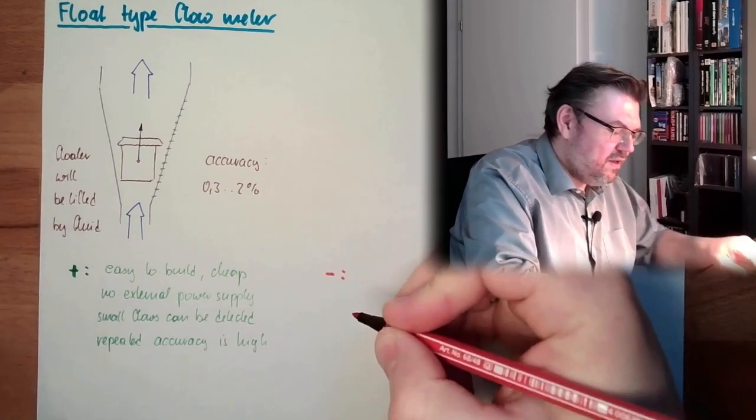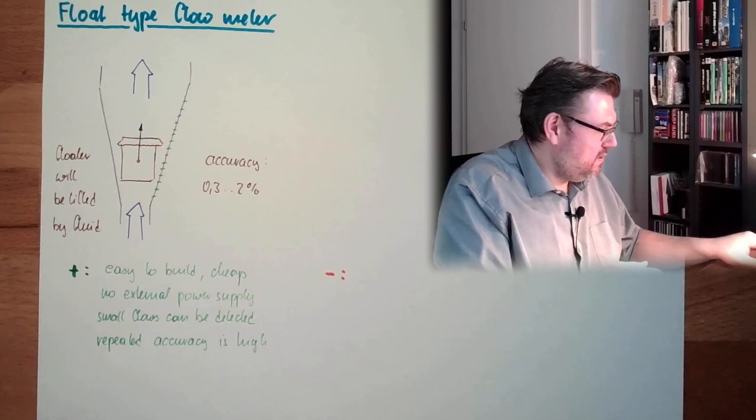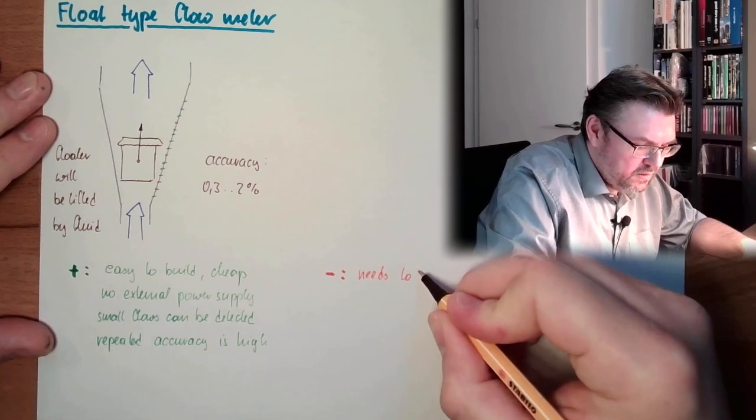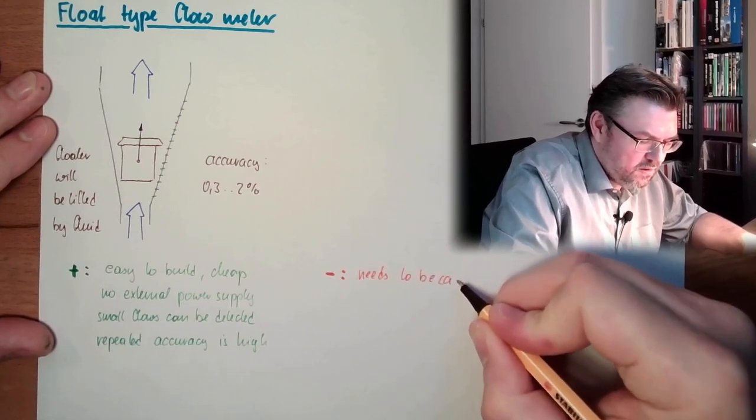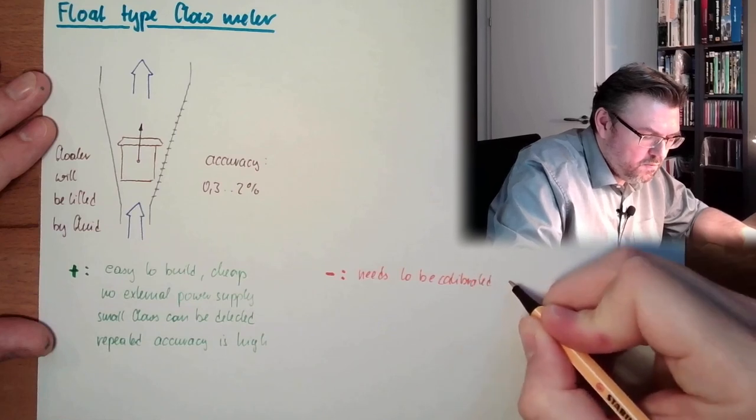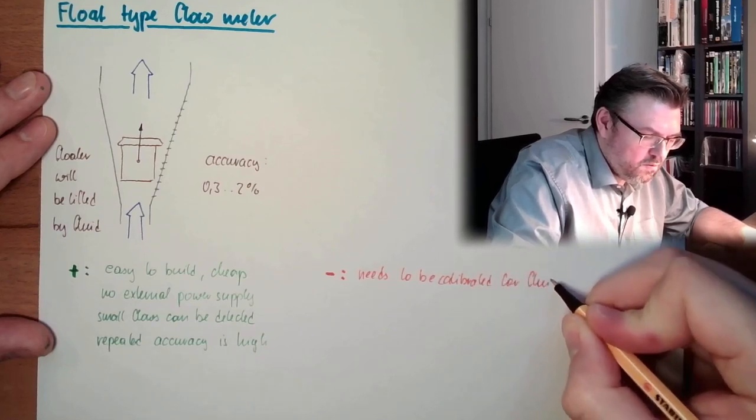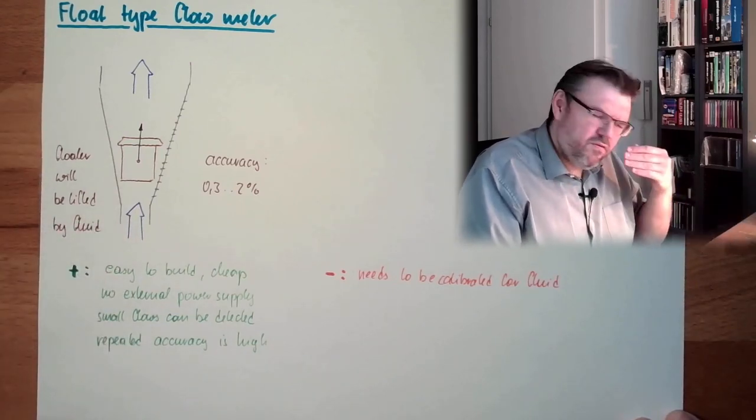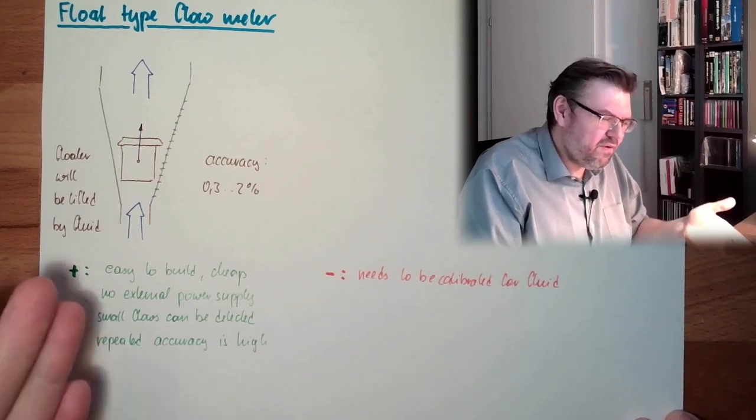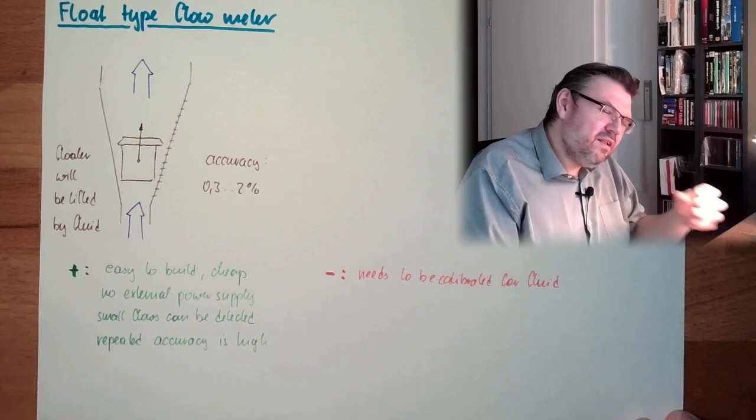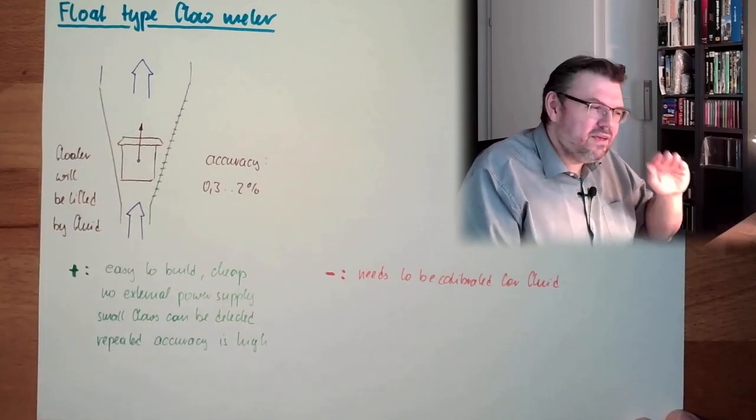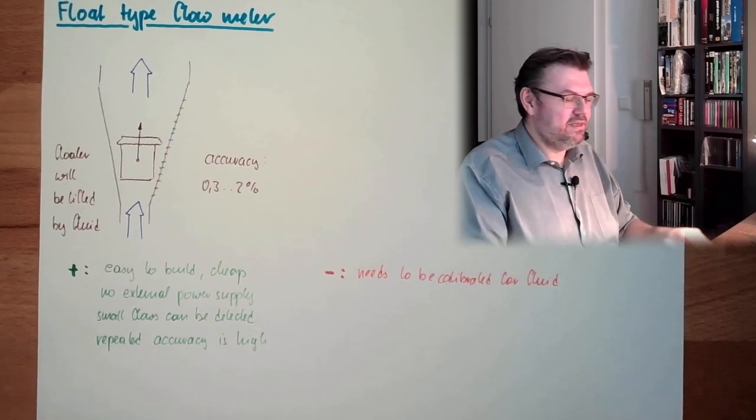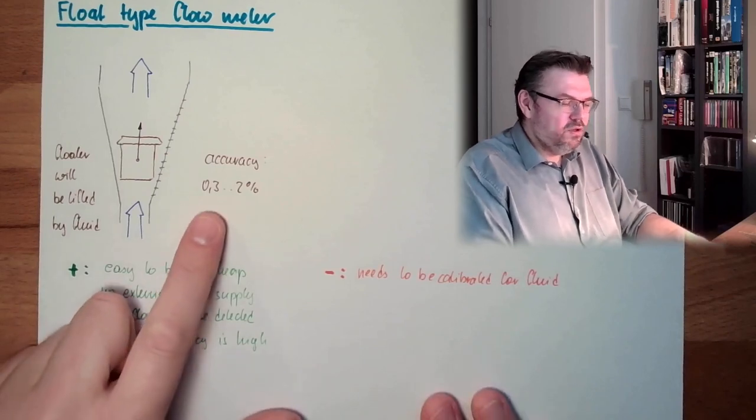It needs to be calibrated for the fluid, needs to be calibrated for a certain type of fluid. If the fluid has a different property, like a different pressure, a different density, or something like this, we have to adapt the scale. We have to calculate from the scale to another scale. So we have to scale the scale. This needs to be calibrated. Then the total accuracy is fine.